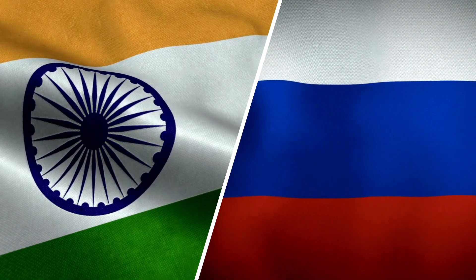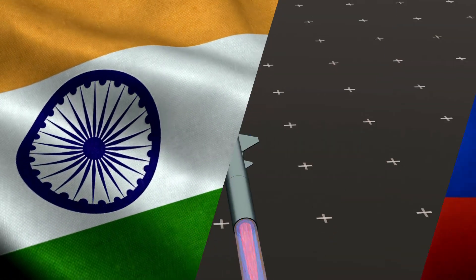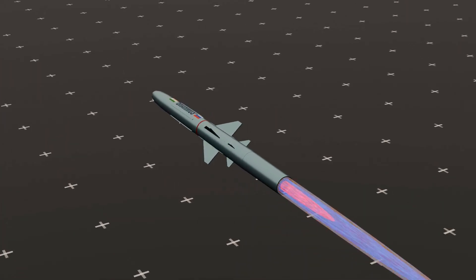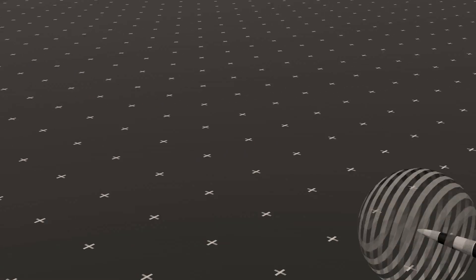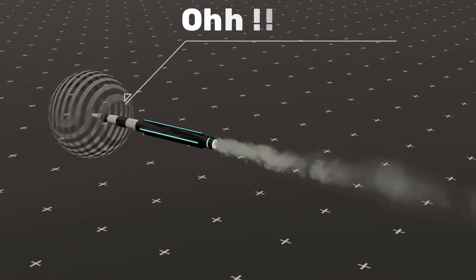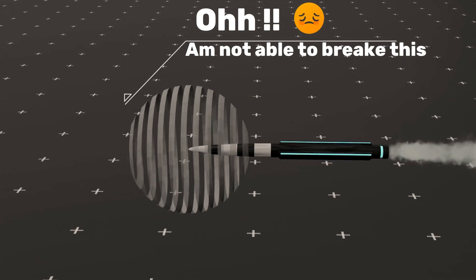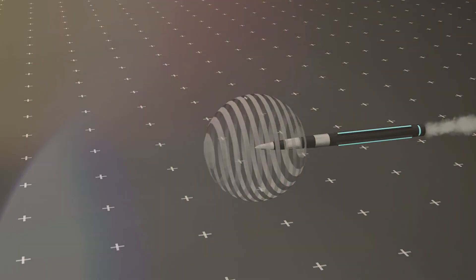The BrahMos missile was jointly developed by India and Russia. Currently, work is underway on BrahMos 2, which will be a hypersonic missile. The Mach 1 speed acts as a physical barrier that many missiles and even passenger planes struggle to surpass. Let's simplify this concept.